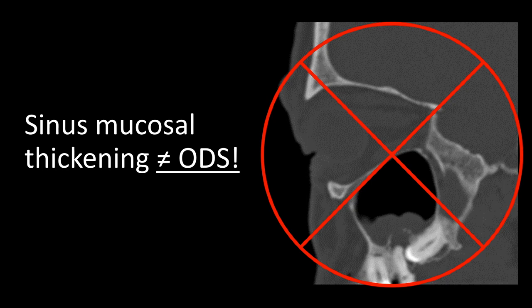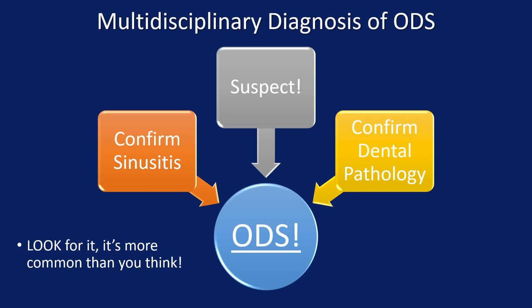To summarize how to diagnose odontogenic sinusitis: first, I encourage everyone to simply look for this condition — it's much more common than you think. There are three central tenets: first, suspect the condition based on clinical features known to be more common in odontogenic sinusitis; then the otolaryngologist should confirm sinusitis, ideally with nasal endoscopy; and dental specialists should confirm the dental pathology. While this paradigm may seem simple, it doesn't work without close collaboration between dental providers and otolaryngologists. Let's spread the word about this multidisciplinary approach to diagnosing odontogenic sinusitis.